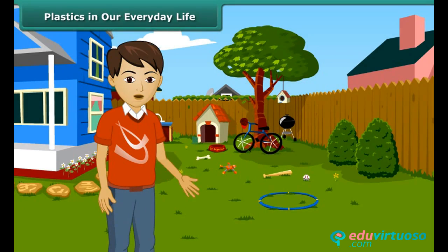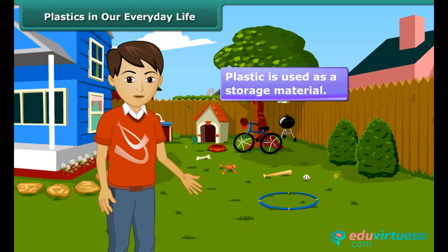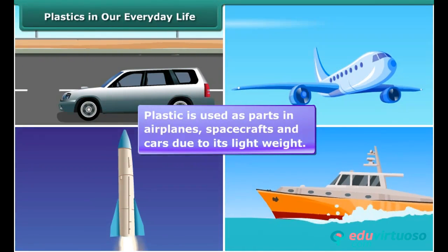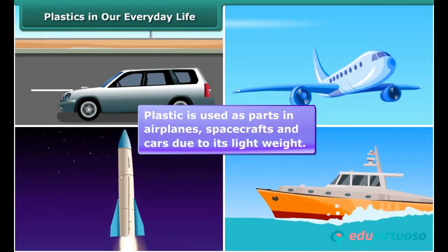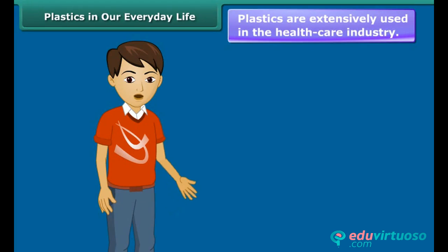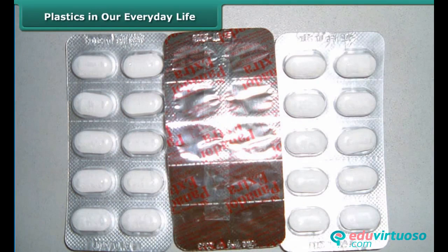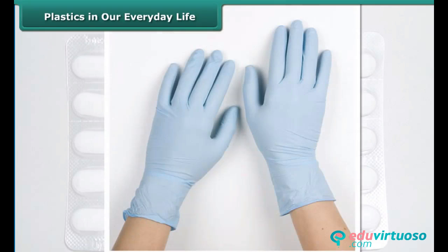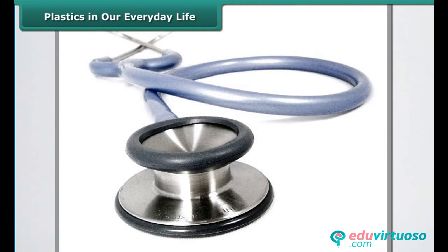Not even a single day passes when we haven't seen or used an object made of plastic. It has taken so much prominence in our lives due to a number of its properties which make it convenient to use. It is used as parts in airplanes, spacecrafts and cars due to its light weight and strength. Plastics are also extensively used in the healthcare industry for packaging of tablets, as threads for stitching wounds, syringes, doctor's gloves and a number of medical instruments.